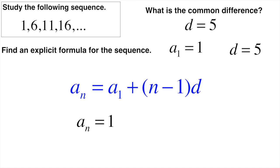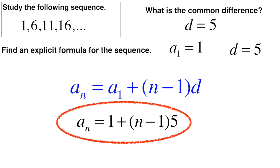aₙ equals... a₁ is 1, and again we don't know n, and the d again is going to be 5. So this would be our explicit formula. When you're asked to find one, it's actually kind of easy, as long as you can identify what the common difference is, and you know the first term, and you've got your sequence.